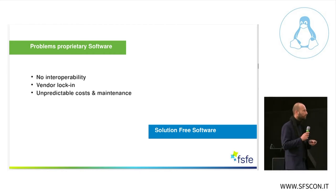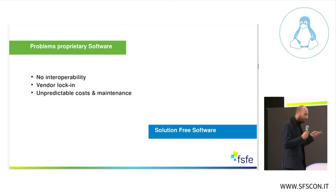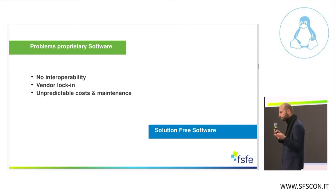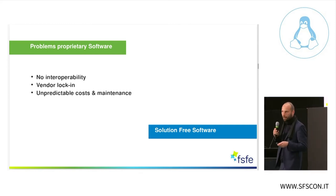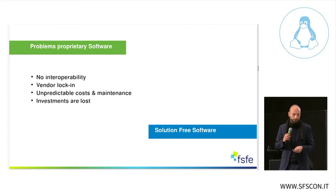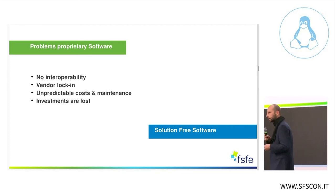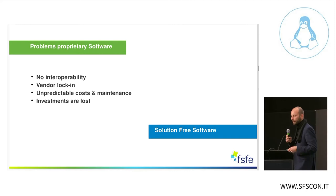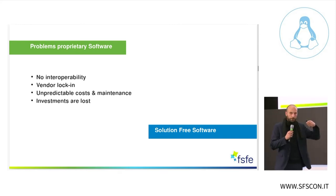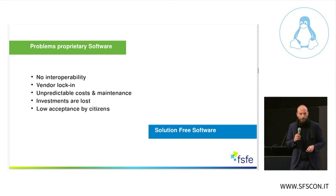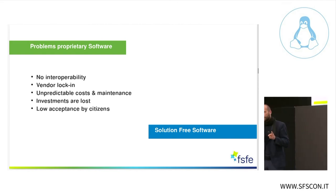The fourth freedom is to improve or to modify the software, so everybody can not only see the code but also contribute to the code. This doesn't mean necessarily that you need to be a coder to contribute — others can also contribute to software, and this is very important.